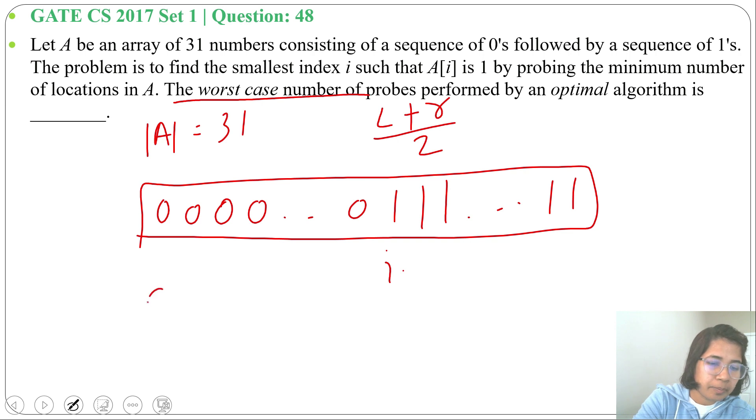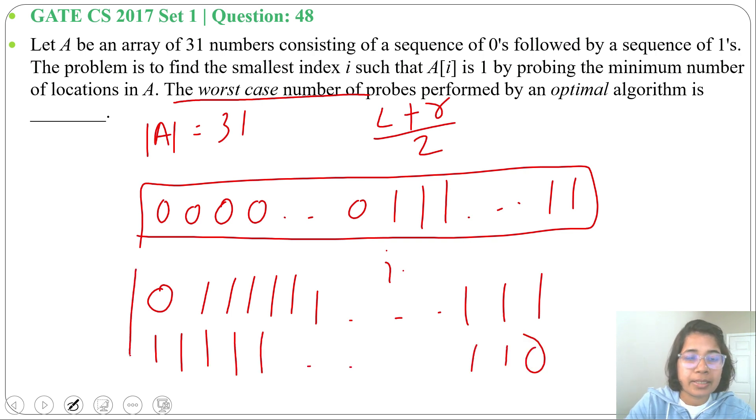So worst case example will be one 0 followed by 31 ones, or 31 zeros followed by a single 1. So these are the worst case examples where it will take maximum probes.